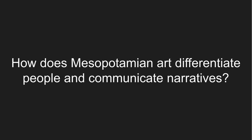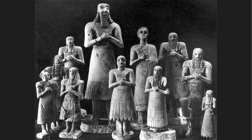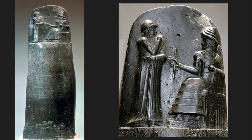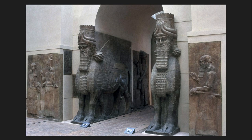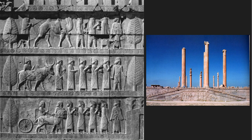Mesopotamia was comprised of city-states — not like Egypt where it was one dynasty — and they were very connected because they had to trade with other civilizations for resources they lacked naturally. Our key question: How does Mesopotamian art differentiate people and communicate narratives? Think about that while we look at our artworks: Sumerian votive statues from the Temple of Ashwana, Code of Hammurabi, Lamassus from the Citadel of Sargon II, Standard of Ur, and low-relief sculpture from Persepolis.